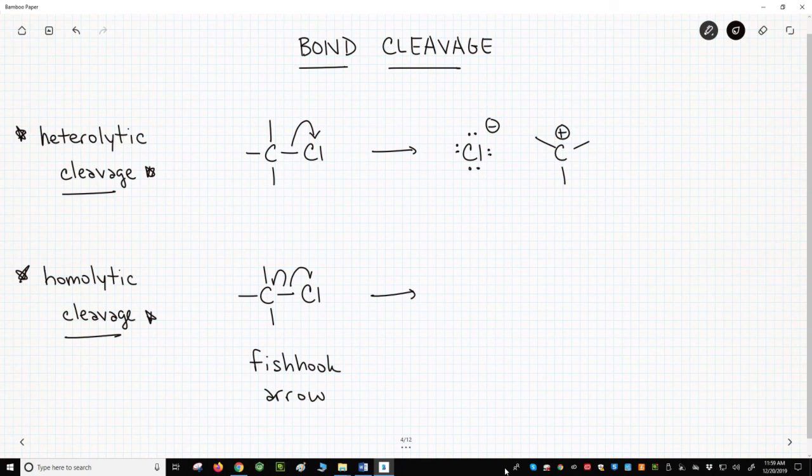The result of this homolytic cleavage is the creation of two neutral radicals. So again, we'll show all the valence electrons on chlorine and carbon.